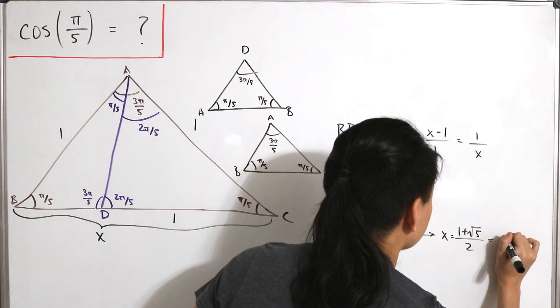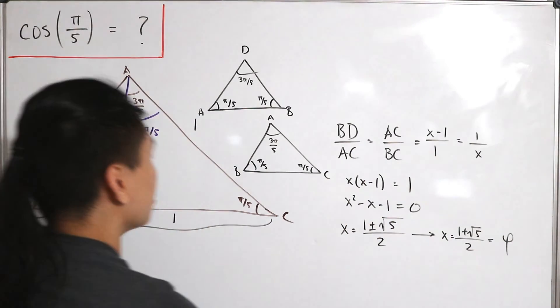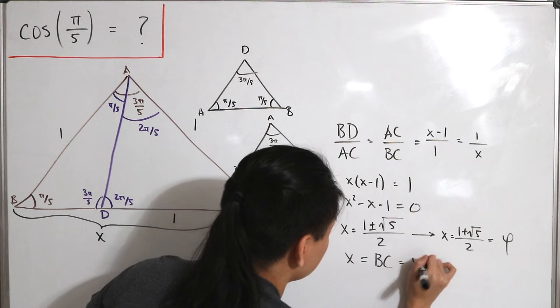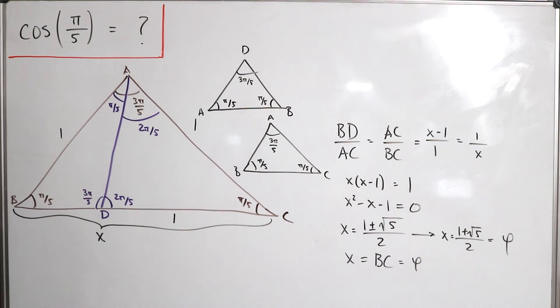So x equals 1 plus the square root of 5 divided by 2, aka the golden ratio number. Therefore x, aka line segment BC, is equal to the golden ratio number: 1 plus the square root of 5 divided by 2.